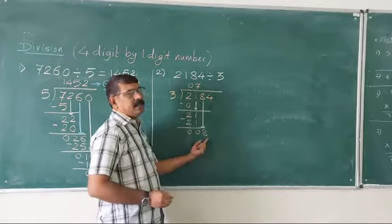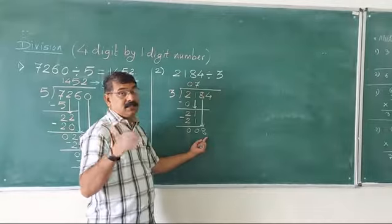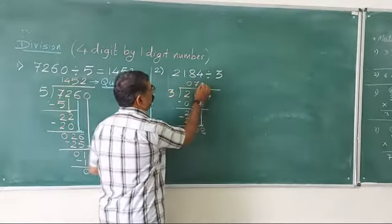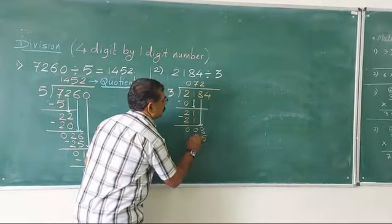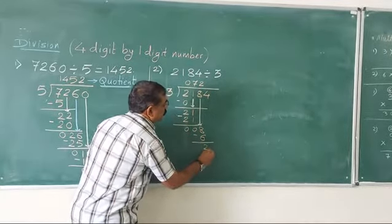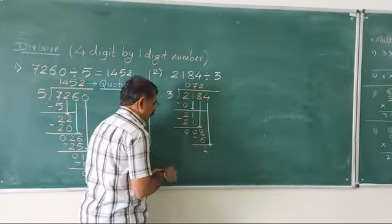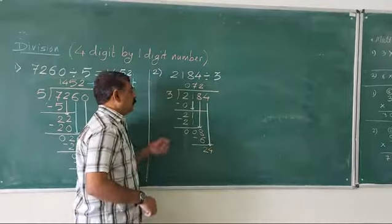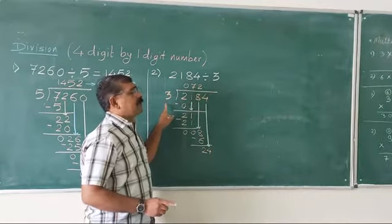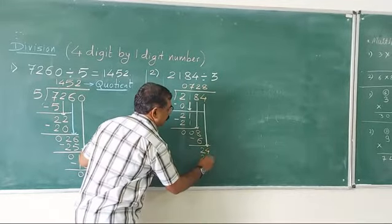Now we divide 8 by 3. 3 ones are 3, 3 twos are 6, 3 threes are 9 — 9 will be bigger, so we go one step back: 3 twos are 6. So 8 minus 6 gives remainder 2, and we bring down the next digit 4, so it becomes 24. We know the table of 3 and 24 comes in it — 3 eights are 24. So here will be 8 and here will become 24.